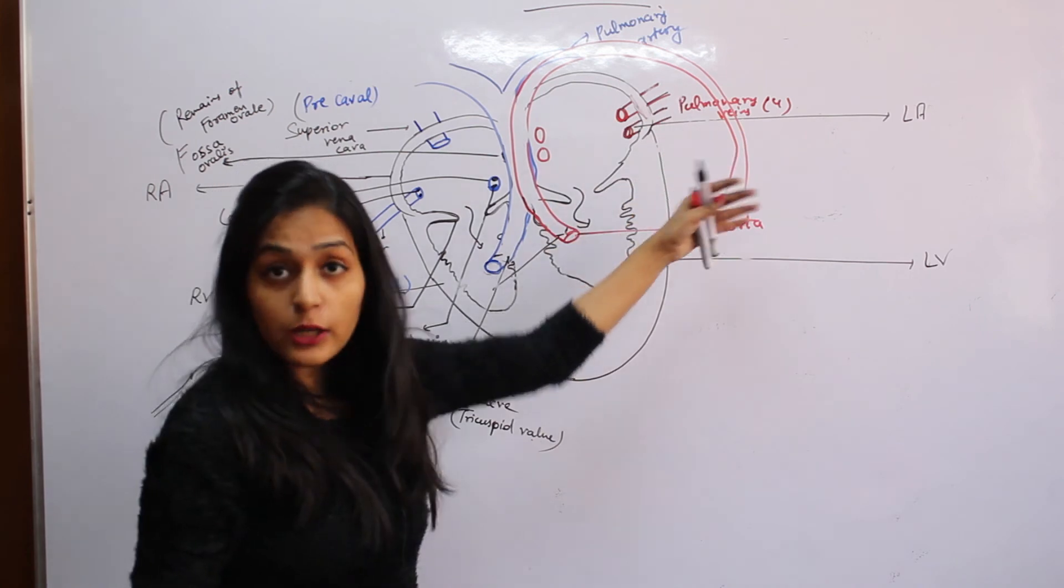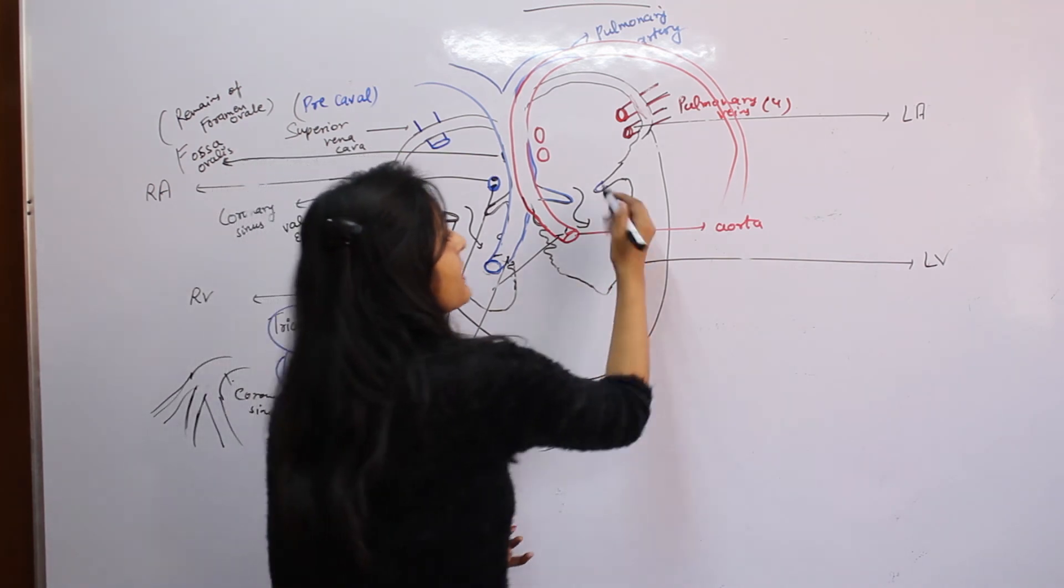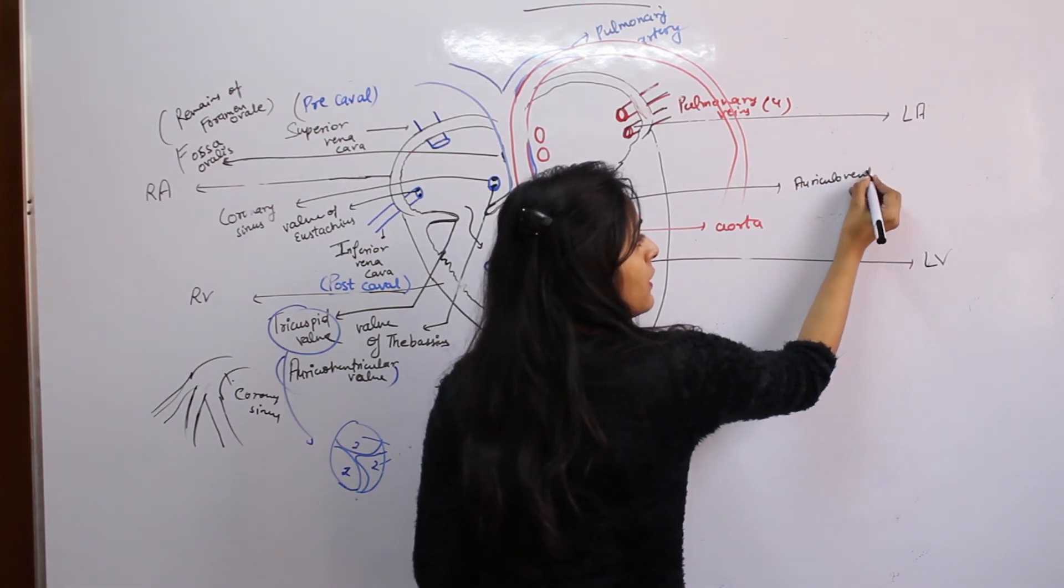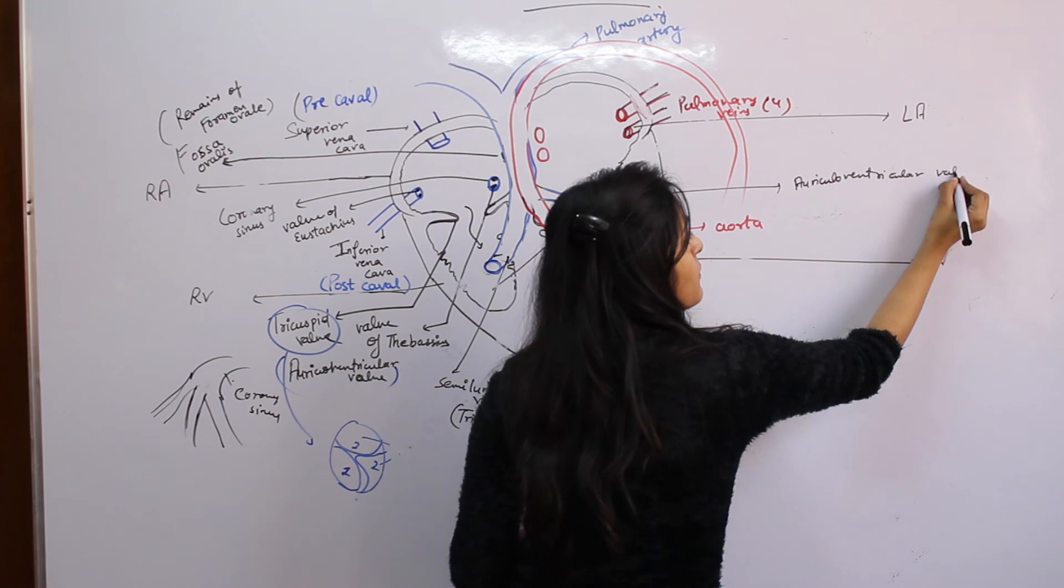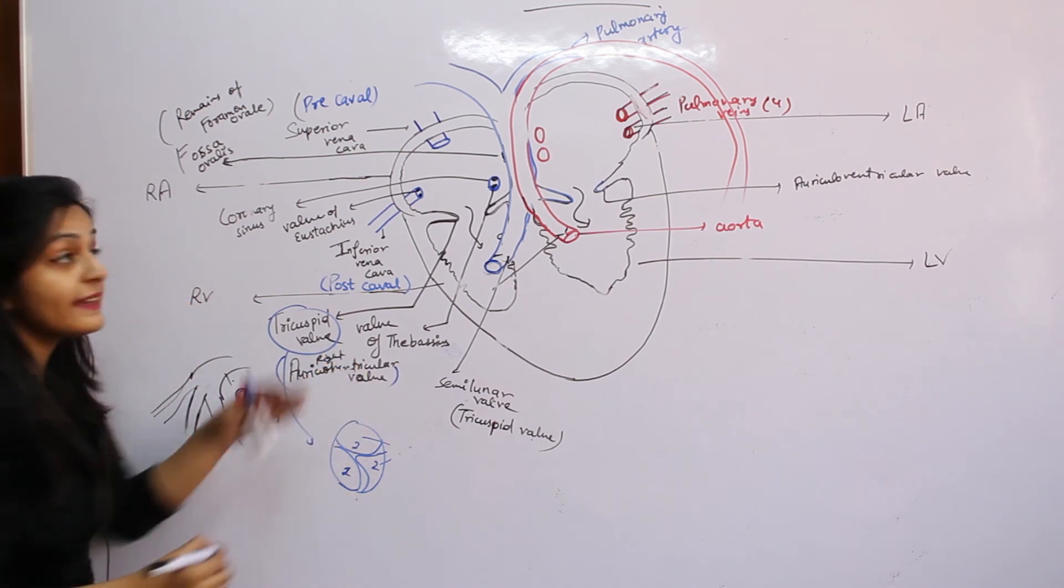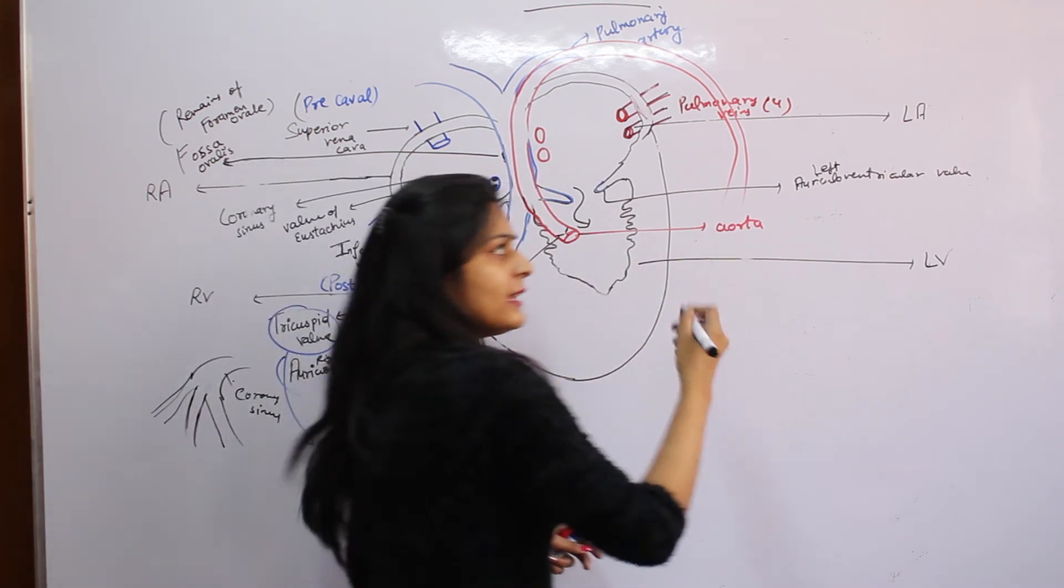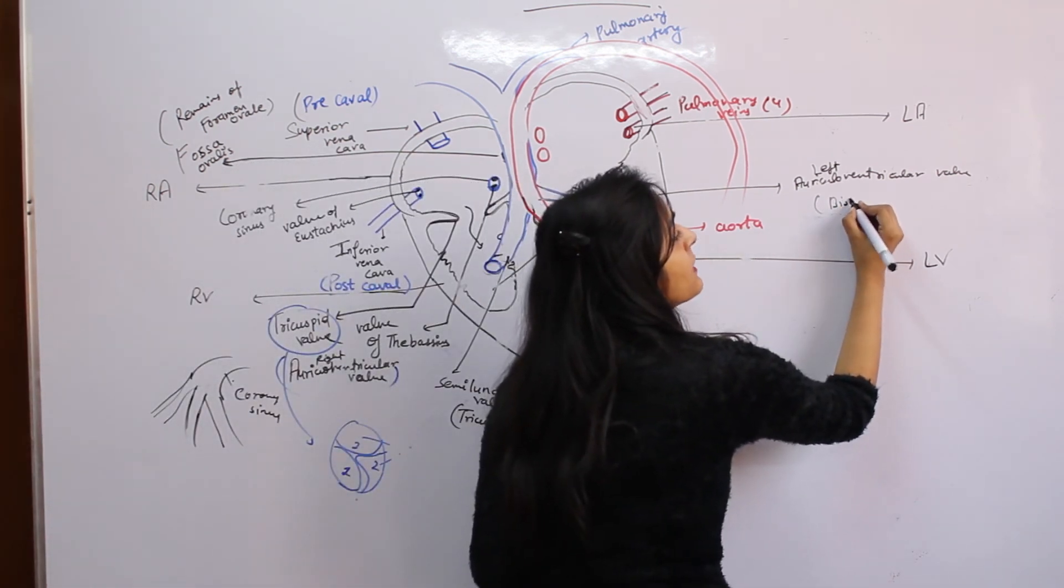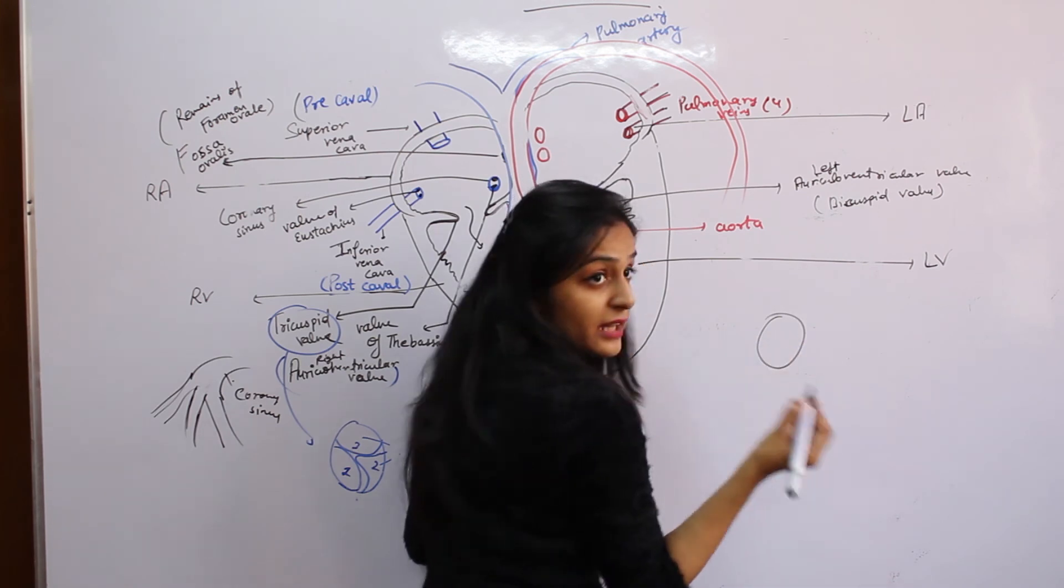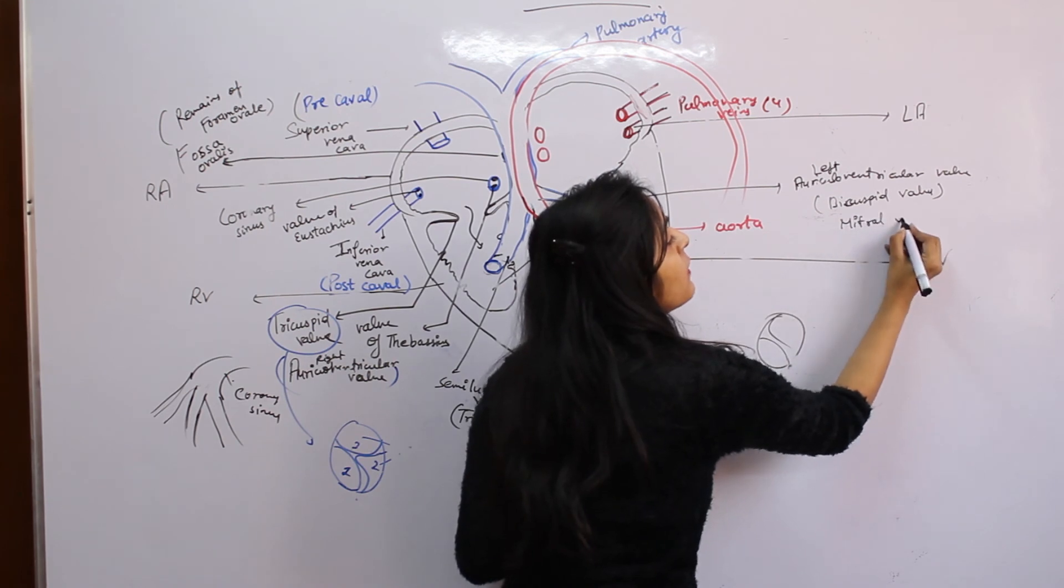The valve present between left atricle and left ventricle is the left auriculoventricular valve. Because this is on the left side. The left auriculoventricular valve is also called the bicuspid valve. This valve contains two cusps only, and is also called the mitral valve.